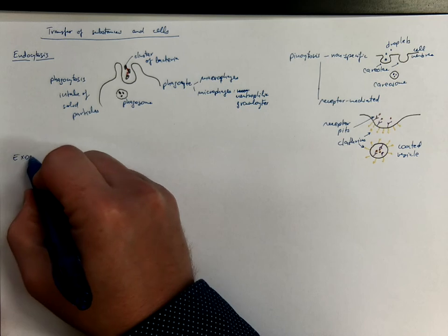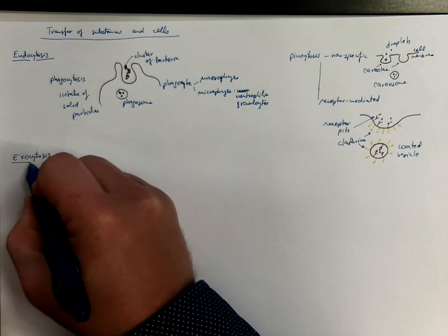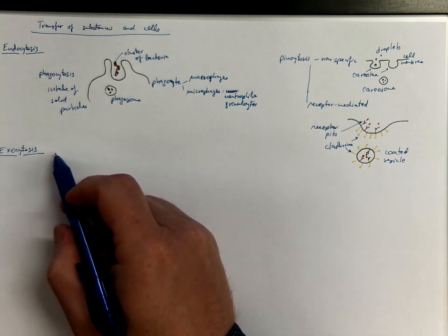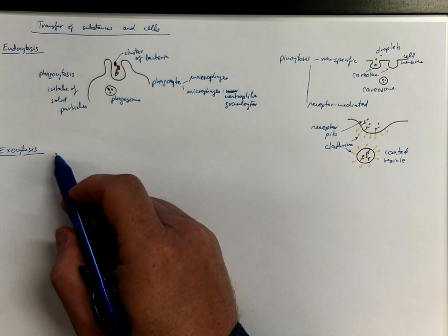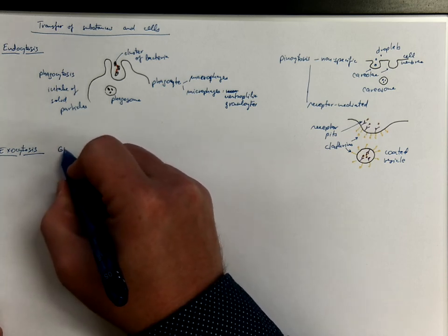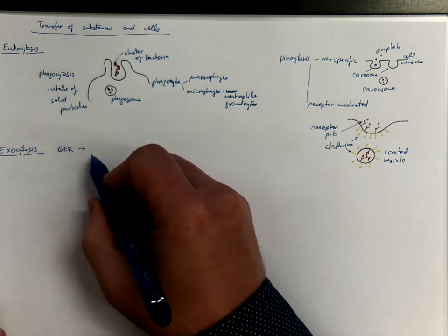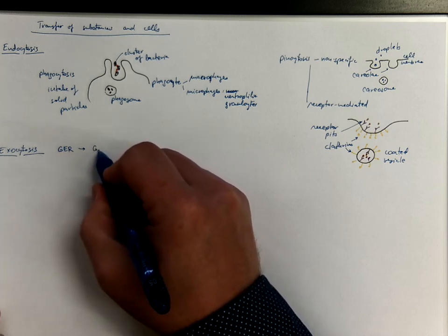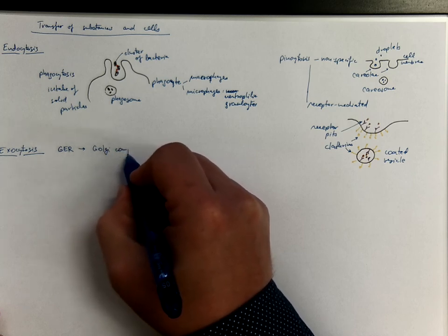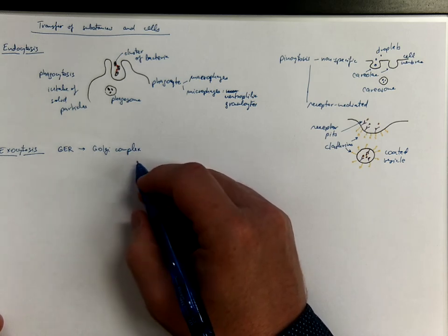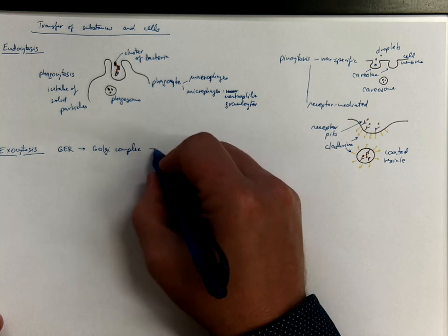Let's discuss briefly the exocytosis. Most of the mechanisms have been already discussed in the part describing the endoplasmic reticulum and Golgi complex. So briefly, there is synthesis in the granular endoplasmic reticulum. Substances that have to undergo exocytosis are modified in the Golgi complex. So various post-translational modifications occur here, and also coating of the vesicles, so formation of the secretory vesicles.